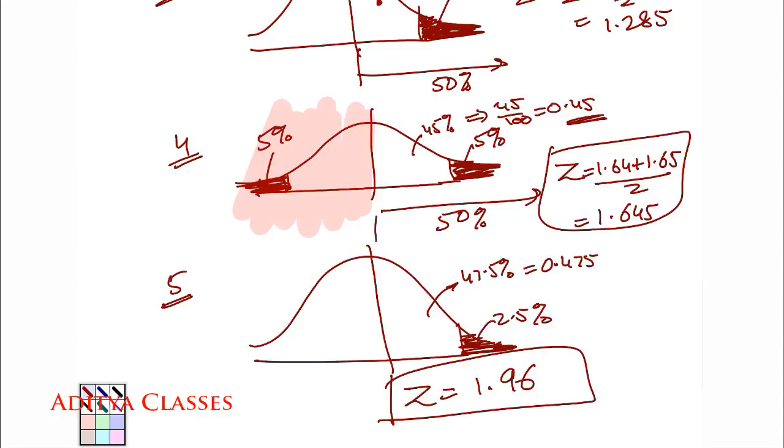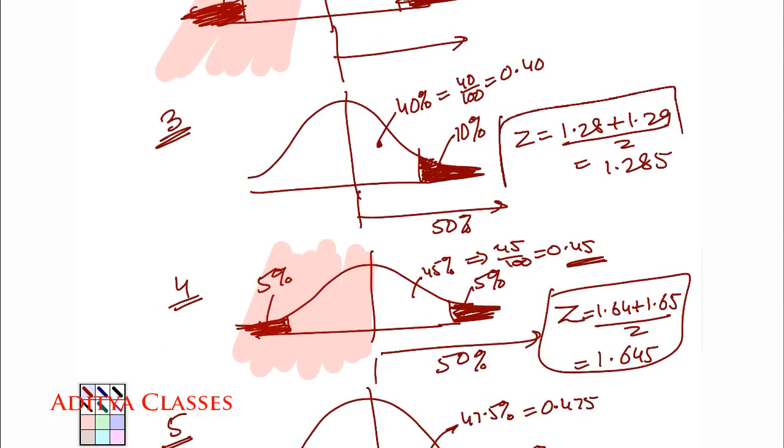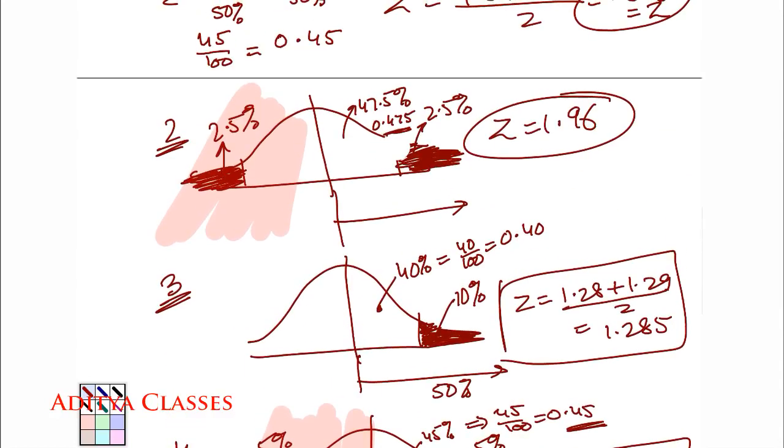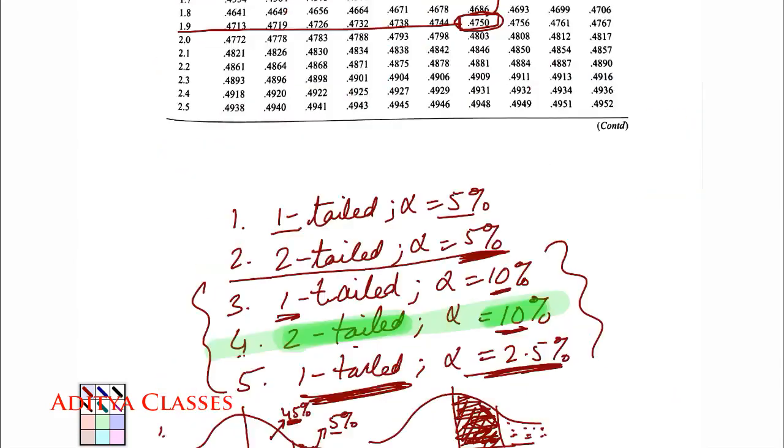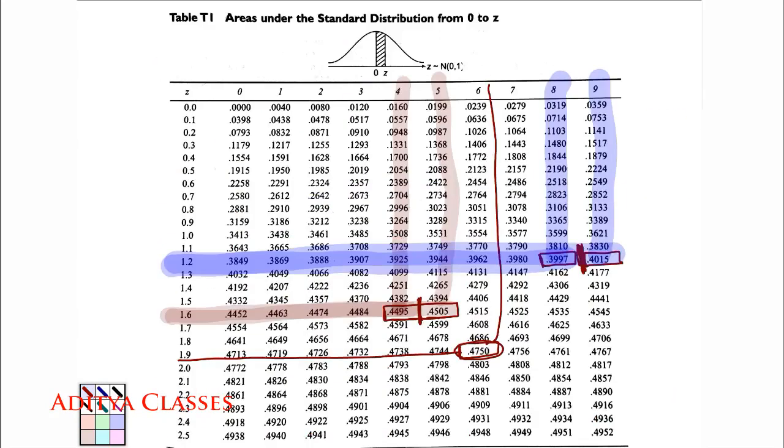This is how we go about finding z values depending on whether we have a one tailed problem or a two tailed problem. When we meet next time, we will solve certain questions on z and t or learn some other tables. For now, thanks for watching. Bye bye.